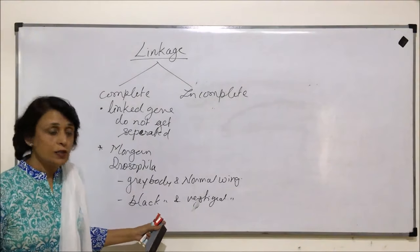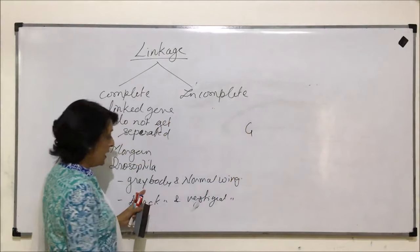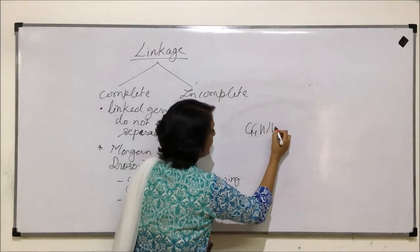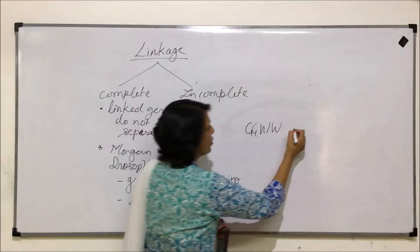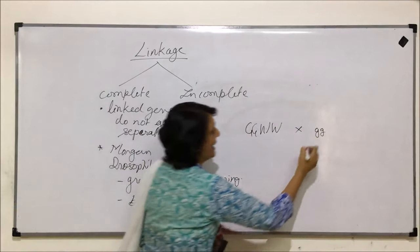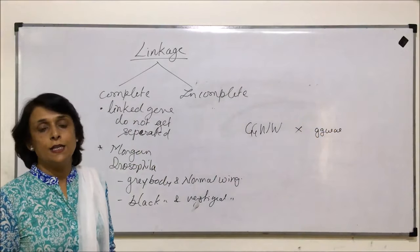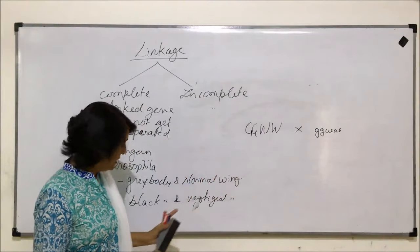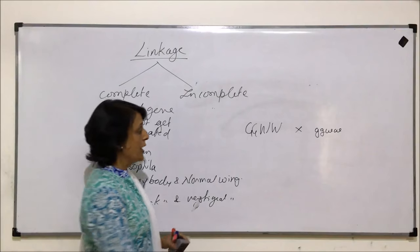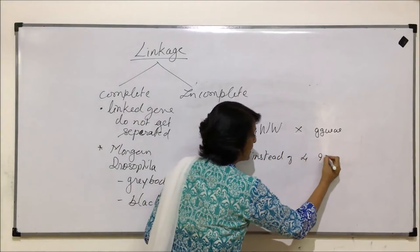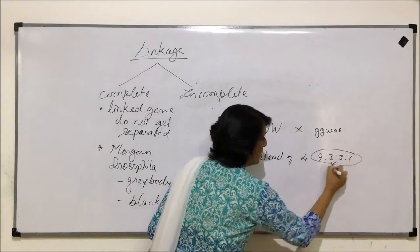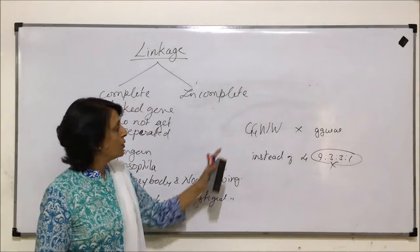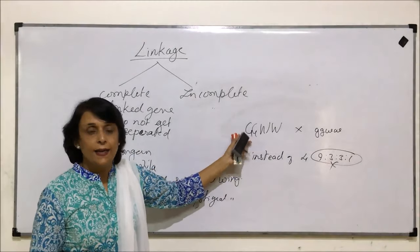Normally in a dihybrid cross, we start with gray body and normal wings — homozygous for both — crossed with black body and vestigial wings. In F1 we expect the dominant characters, and in F2 these characters segregate. But if genes are completely linked, in F2 instead of the 9:3:3:1 ratio, we get an 8:8 ratio — meaning the two linked combinations are maintained and these two genes will not get separated.